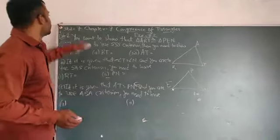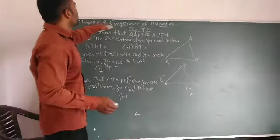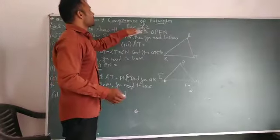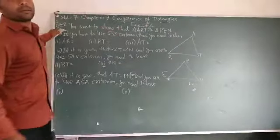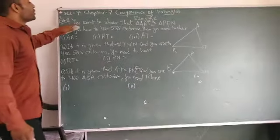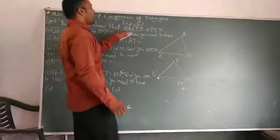Hello students, welcome to one day lecture, standard 7, chapter number 7, congruence of triangles, exercise 7.2, example number 2. The question is, you want to show that triangle A, R, T.